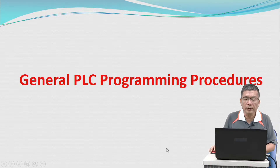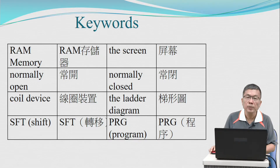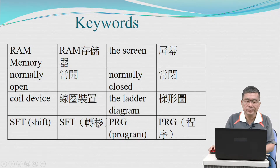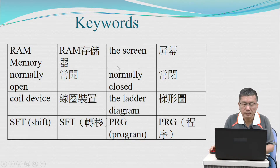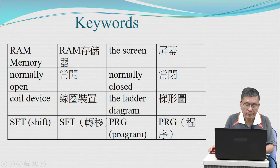General PLC programming procedures — programming procedures and formats. The keywords: RAM memory, the screen, normally open, normally closed, coil devices, the ladder diagram, shift, program.